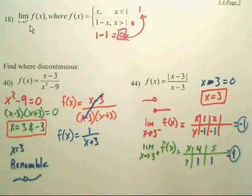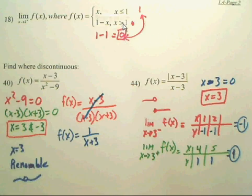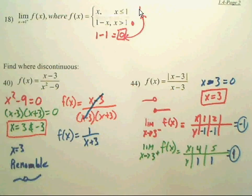A very common question is finding the limit of a piecewise function from one side. If you're finding the limit from the positive side at x equals 1, you're approaching from the right, so you care about values greater than 1 and use that piece of the function. Plugging in 1 gives zero. From the negative side, plugging 1 into the other piece gives one. So from the positive side the answer is zero, from the negative side it's one, and there is no overall limit at x equals 1.